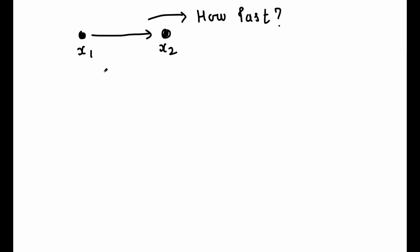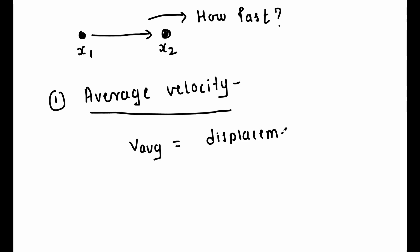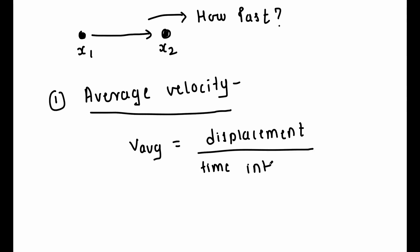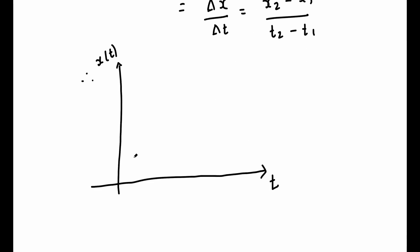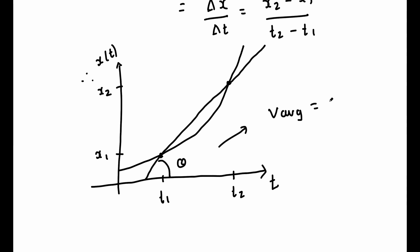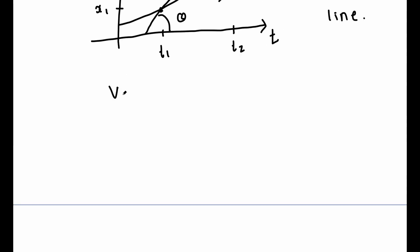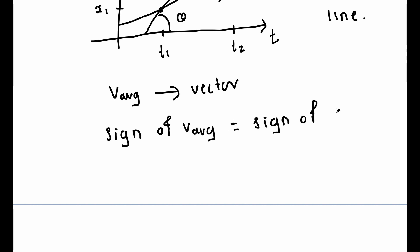We can ask: how fast is a particle moving? There are several quantities defined to answer this question. One such quantity is average velocity. It is the ratio of displacement to the time taken in which the displacement has occurred. So V_average = delta x / delta t. In the graph of x versus t, V_average is the slope of the straight line passing through the points (t1, x1) and (t2, x2). Just like displacement, V_average is also a vector quantity, and it has the same sign as delta x since delta t is always positive.